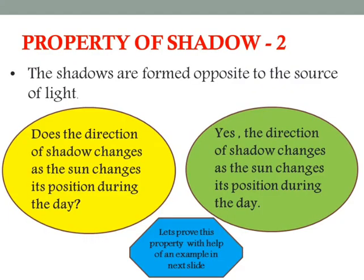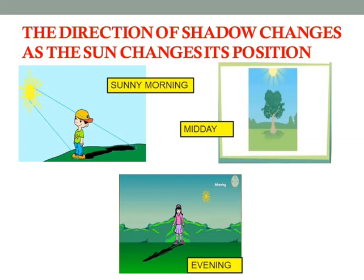Let's see in detail the second property of shadow: shadows are formed opposite to the source of light. Does the direction of shadow change as the sun changes its position during the day? Yes, the direction of shadow changes as the sun changes its position. In a sunny morning, the sun shines on a boy's face, and he sees his shadow on the ground behind him. At 12 o'clock noon, when the sun shines right above the tree, the tree's shadow is right below the tree because the sun is right above it.